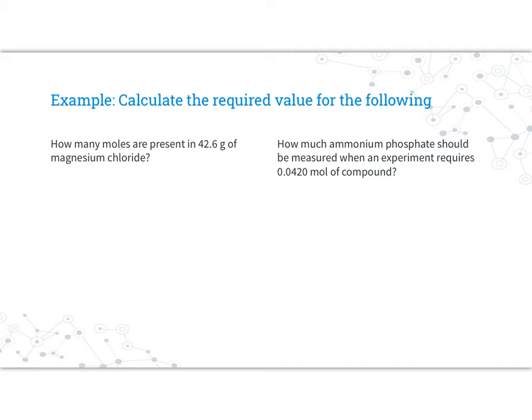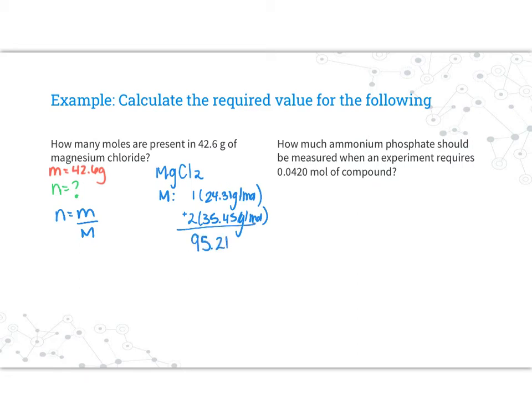How many moles are present in 42.6 grams of magnesium chloride? To get started, sometimes I just like to write out what I have. 42.6 grams represents a mass. In this example, we're working with magnesium chloride. We need to write the formula of magnesium chloride because in the end we're looking for moles. To calculate moles, I need to find the molar mass. The molar mass of magnesium chloride would be calculated by one magnesium and two chlorines. I get 95.21 grams per mole.